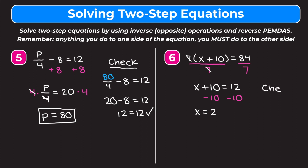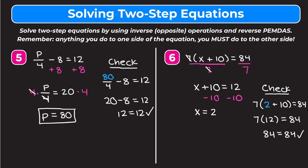Checking our work: we plug in 2 for x, giving 7 times the quantity of 2 plus 10 equals 84. Doing the parentheses first: 2 plus 10 is 12. So 7 times 12 equals 84. 7 times 12 is 84, so 84 equals 84 — a true statement. So x equals 2 is correct. Remember, when solving two-step equations, use inverse or opposite operations and reverse PEMDAS, and anything you do to one side of the equation you have to do to the other.